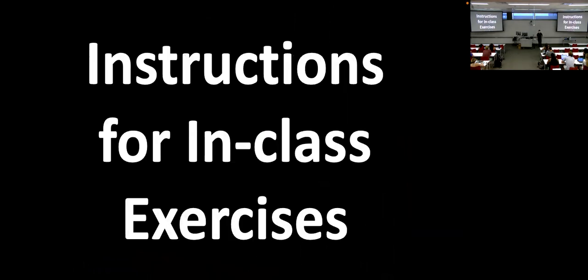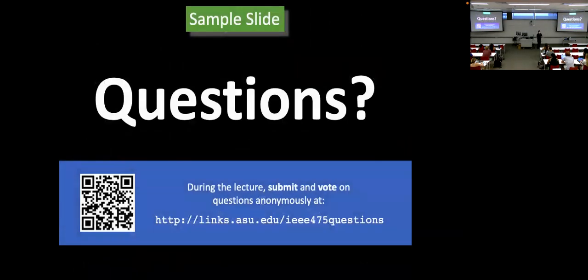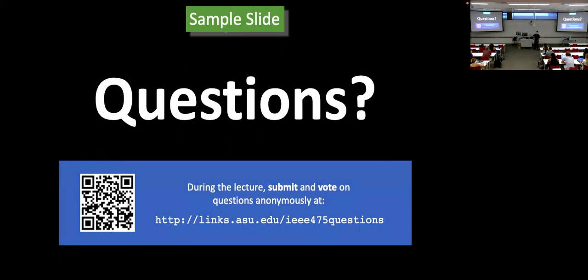So I mentioned two in-class tools. One is the attendance exercise. The other is this anonymous question slide — if you go to this URL or scan this QR code, you can submit an anonymous question. Normally I'll have this up and running, so if you don't want to raise your hand, or you don't want to type in the Zoom chat with your name associated, you can send me an anonymous question. If I don't catch it during class, I'll do my best to post an answer on Canvas afterwards.